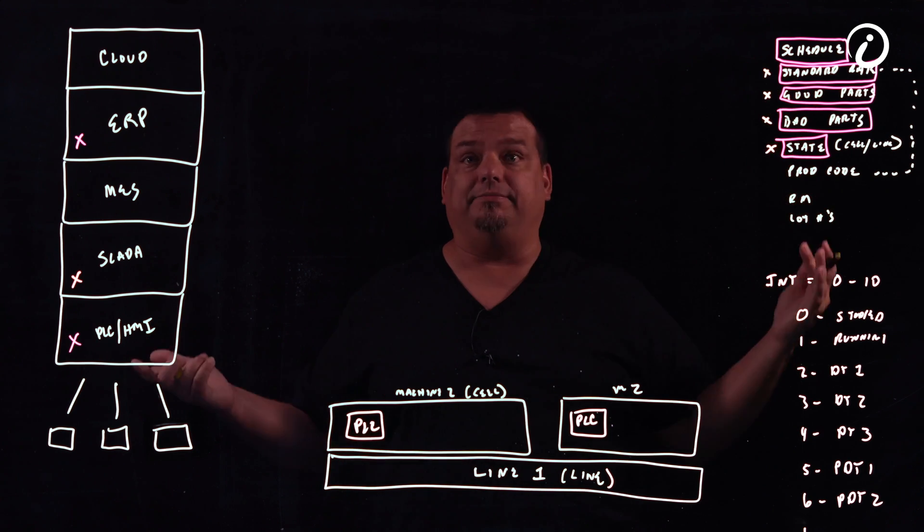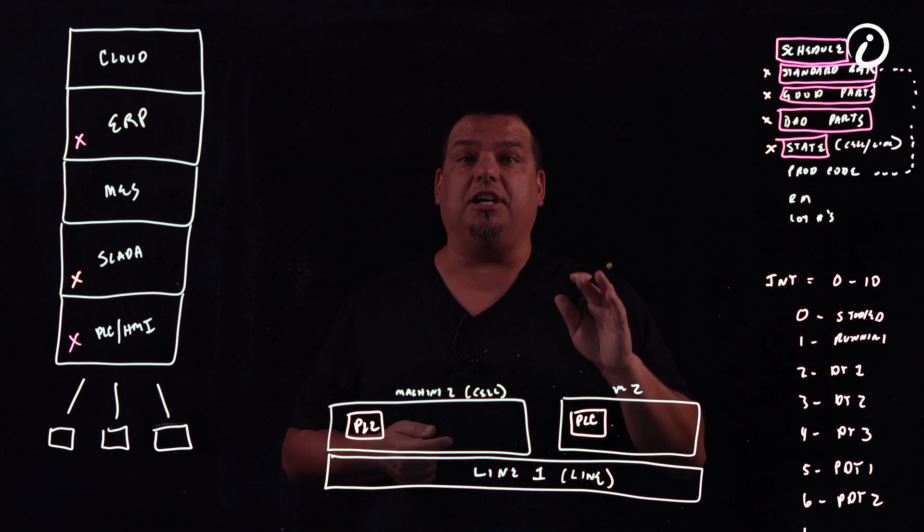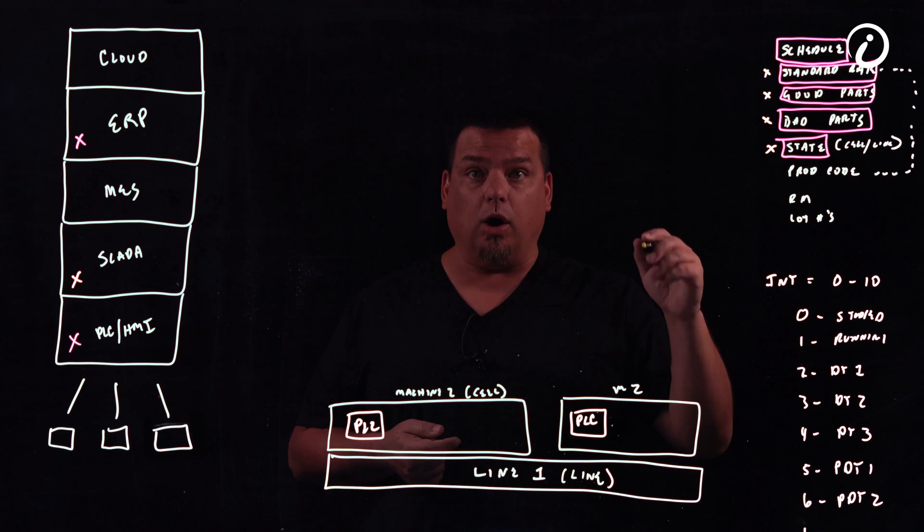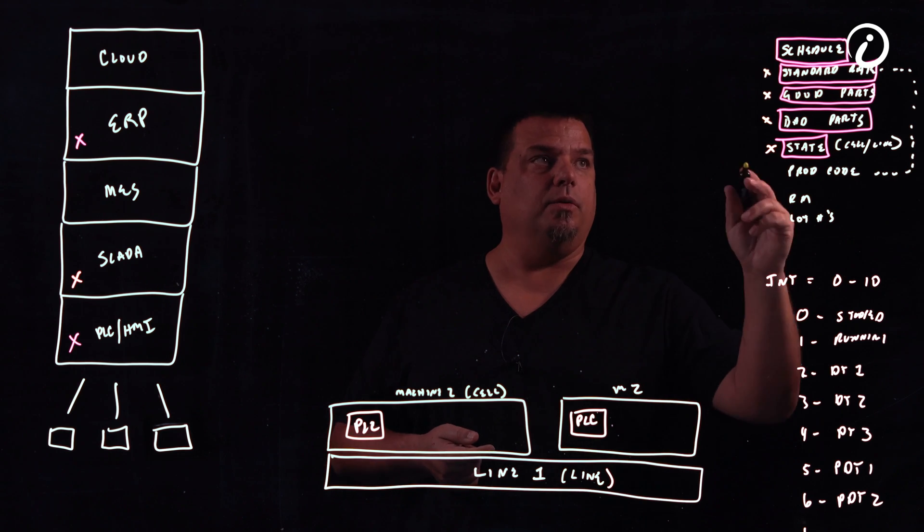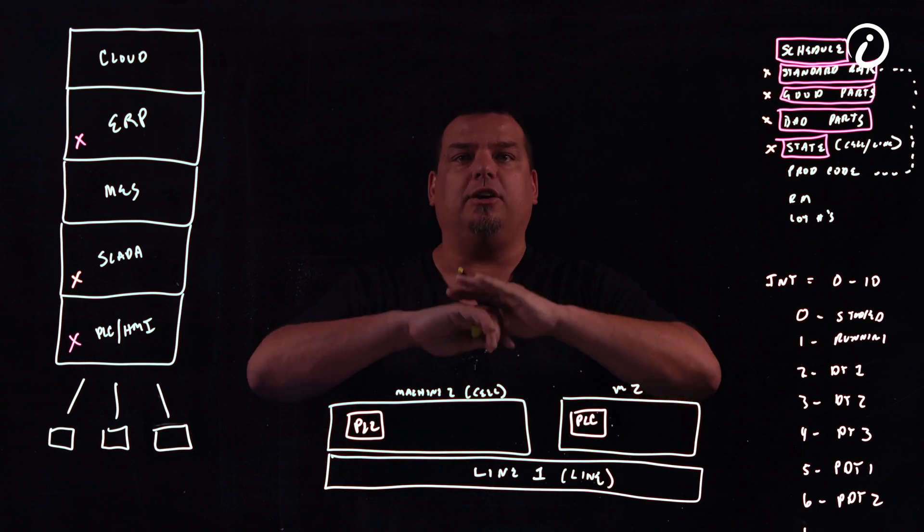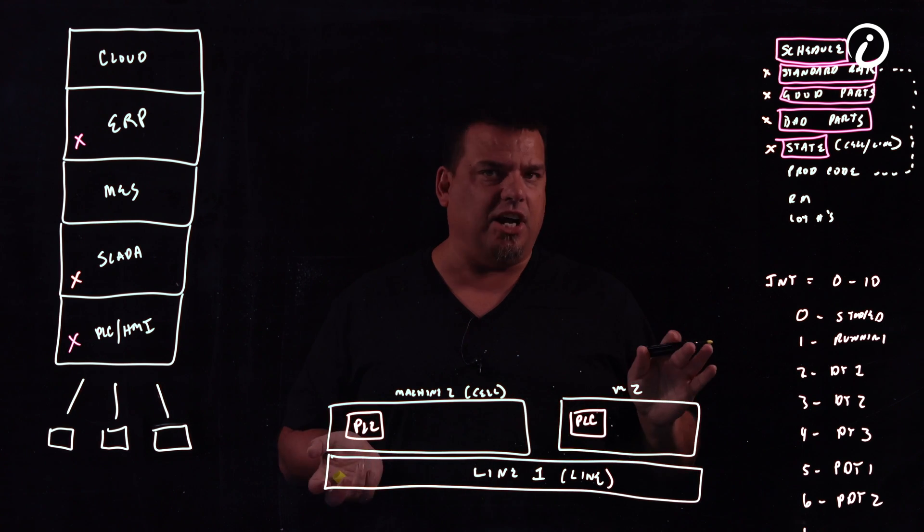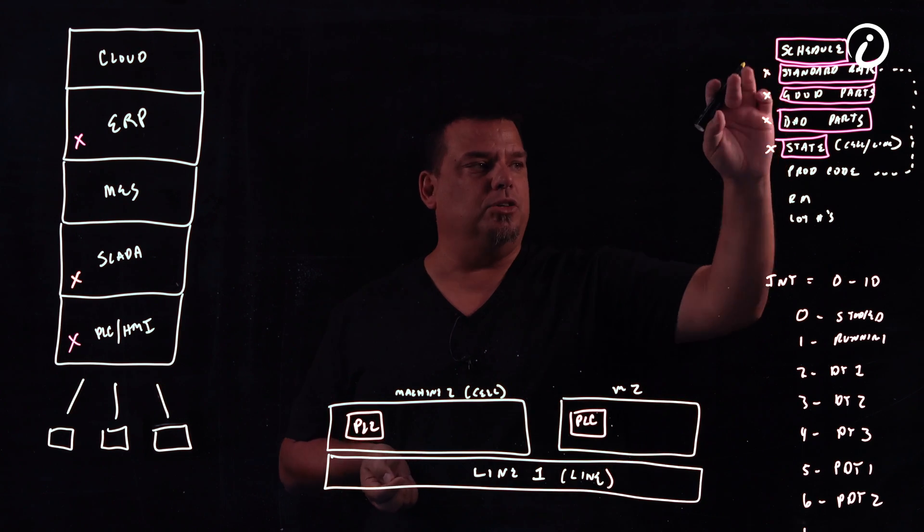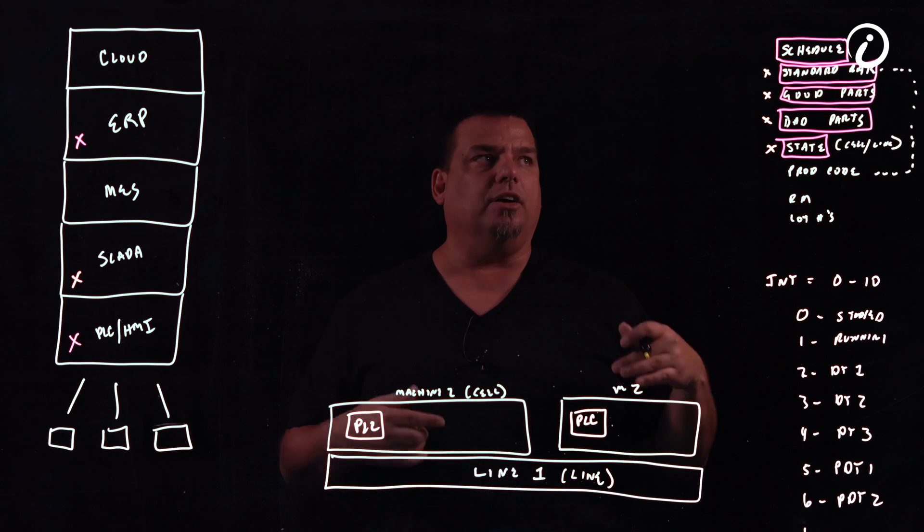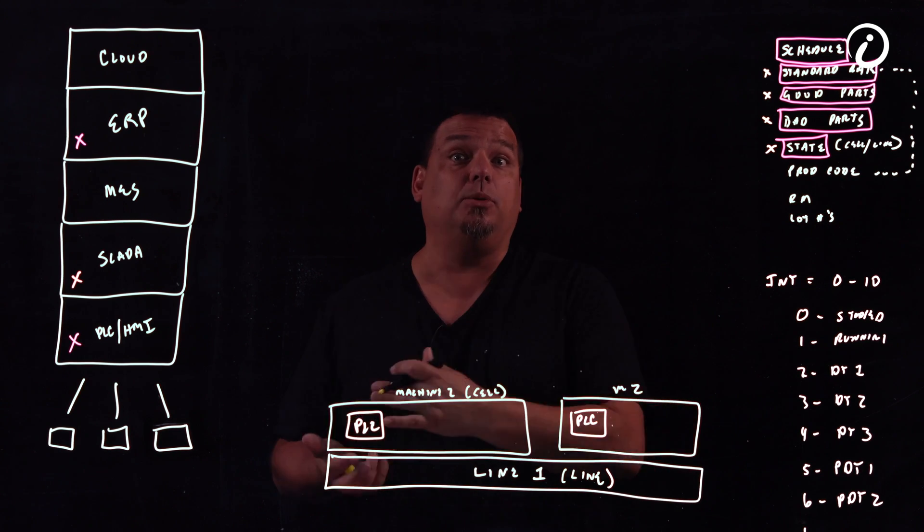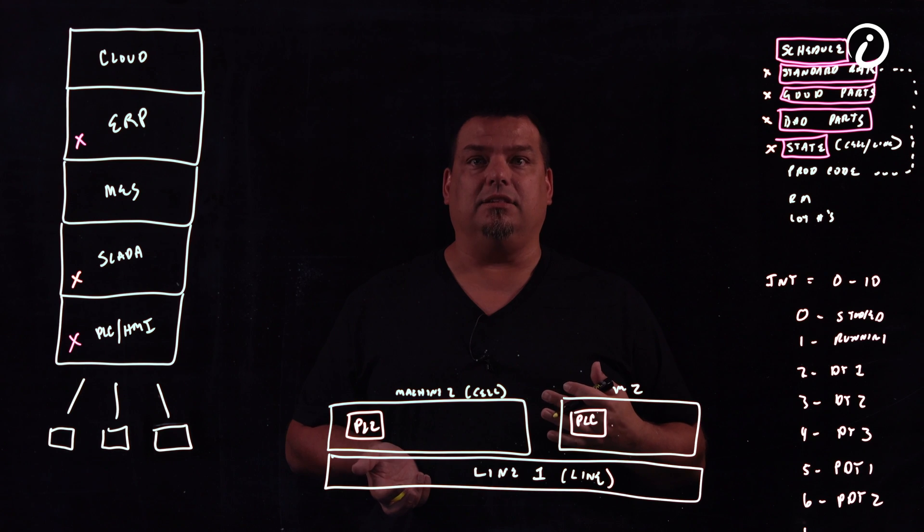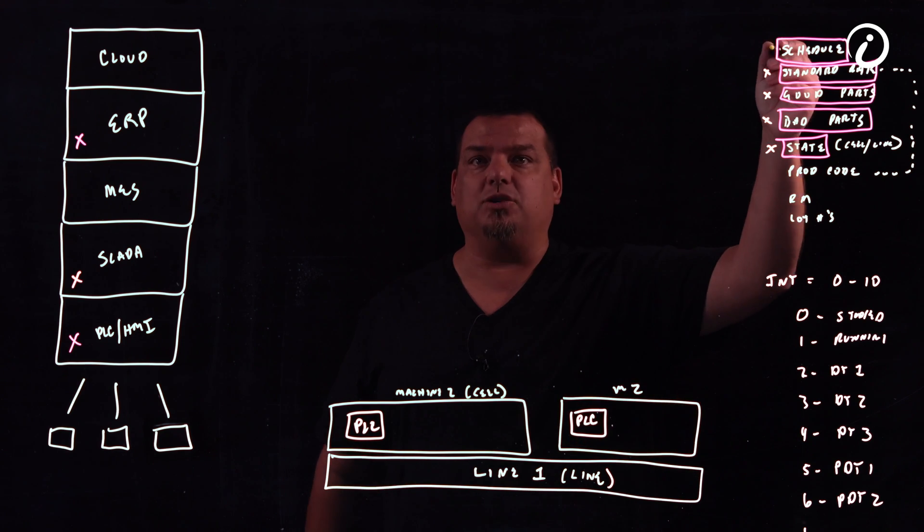We get standard rate from somewhere. Standard rate could be a theoretical rate that's always the same. One part per minute. So my rate could be one part per minute. No matter what, we're always going to compare against my theoretical rate. That's generally not the way you do it. Generally, what you do is you'll have a rate for every product code. You'll have a standard rate for every product code. And generally, we got to pull that from a database.